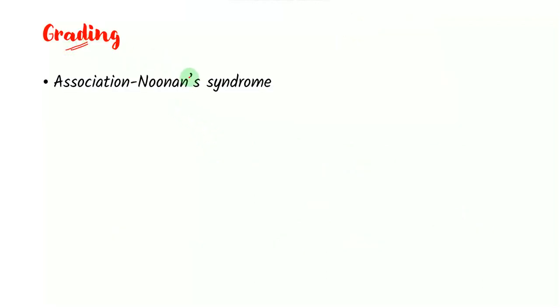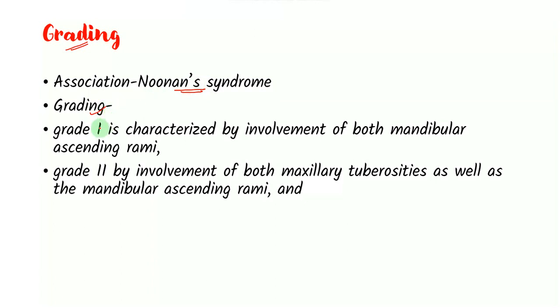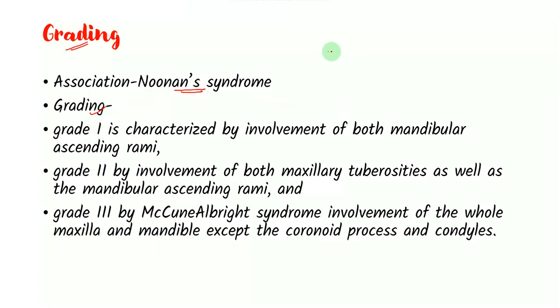If you look at the grading, Cherubism was associated with certain syndromes and one of them is Noonan syndrome. And if you look at the grading, main three grades include: if this is the mandible, then the first grade involves involvement of both the mandible and the ascending ramus. The second grade involves maxillary tuberosities as well as the ramus. And the third grade involves the entire maxilla and the mandible except the coronoid and the condyle. Remember that condyles are usually less affected.